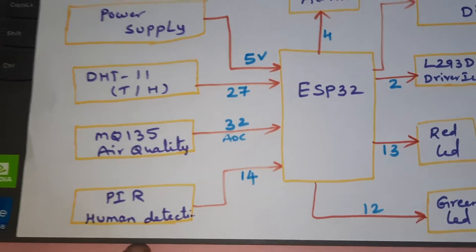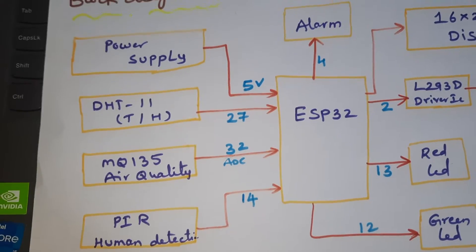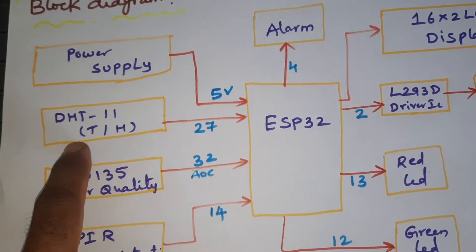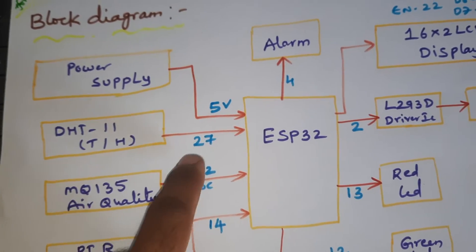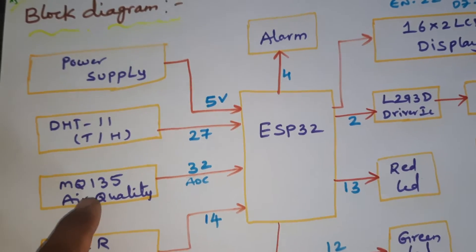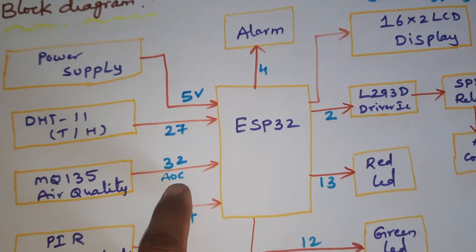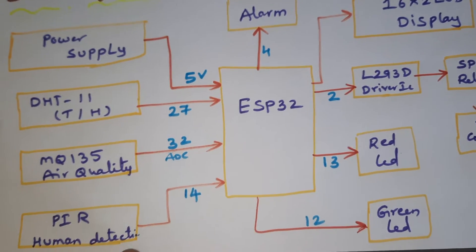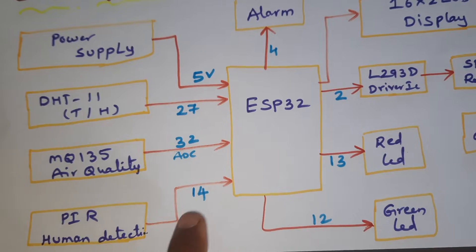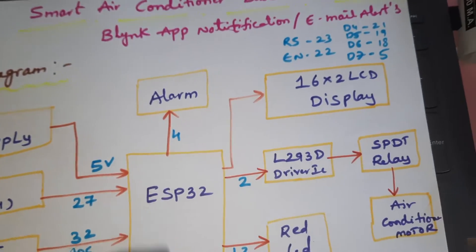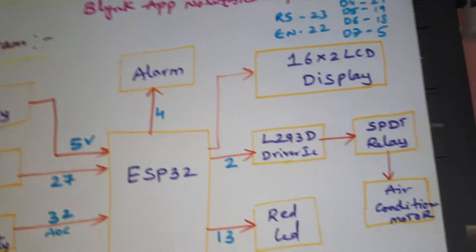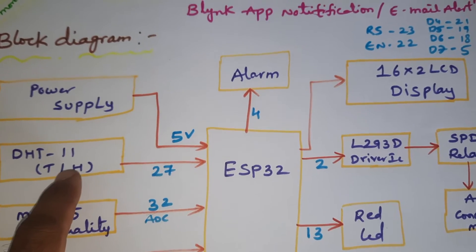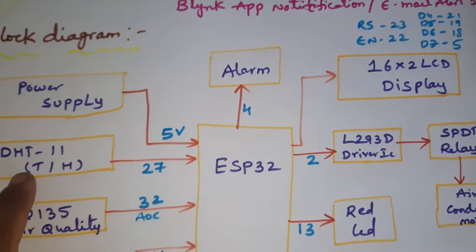The DHT11 temperature and humidity sensor is connected to pin 27. The MQ135 air quality sensor is connected to ADC0, pin 32. The PIR sensor is connected to pin 14. If humidity goes above 80, the alarm should turn on.